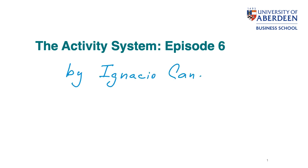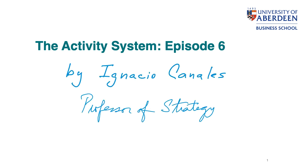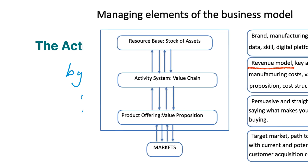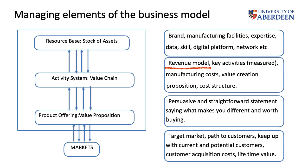Hello everyone and welcome to Strategy, a series of videos explaining business strategy. Today it's episode 6: the Activity System. Do you remember our business model? Previously we covered the product offering; today we'll be covering the Activity System. One of the ways to understand the Activity System is with Porter's value chain. In general, an Activity System is a set of tasks that are interlinked with a specific aim.